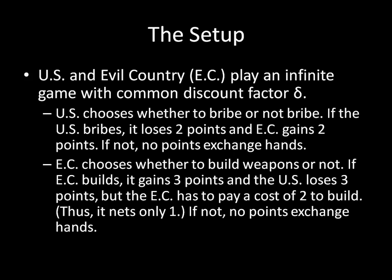There are going to be two countries: the United States and an evil country, which I'm abbreviating EC. They're going to play an infinite game with a common discount factor delta. Each country is going to have two strategies in every period. The United States is going to choose whether to bribe or not to bribe. If the United States bribes, it loses two points and the evil country gains two points. If not, no points exchange hands. Basically, the intuition is that the United States is writing a check for $2 billion and handing it off to the evil country, which is cashing it.